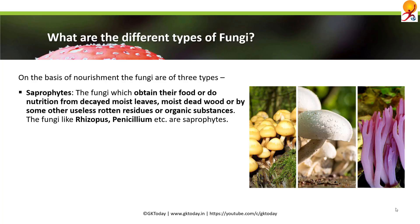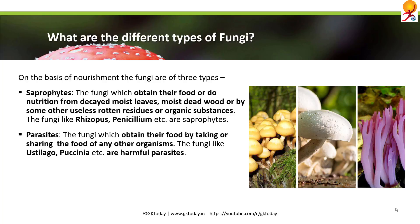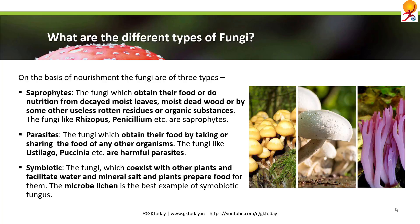On the basis of nourishment, fungi are of three types. Saprophytes are fungi which obtain their food from decayed moist leaves, moist dead wood, or other rotten organic substances — examples include Rhizopus and Penicillium. Parasites obtain their food by taking or sharing the food of another organism — examples include Ustilago and Puccinia.